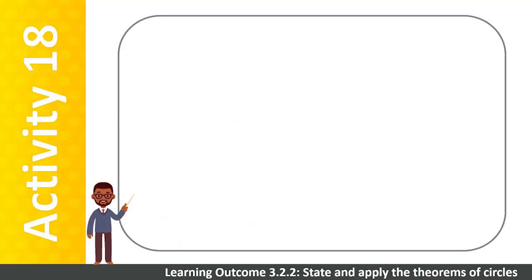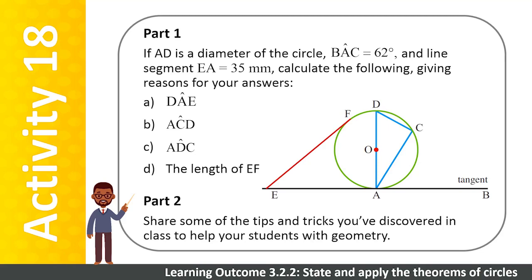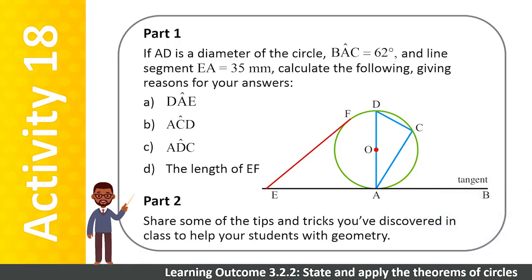You are now going to do another group activity. Part 1: First work through this problem, which uses a combination of tangent theorems. If AD is a diameter of the circle, angle BAC equals 62 degrees, and line segment EA equals 35 millimeters, calculate the required angles. Part 2: Once you've completed the question, share some of the tips and tricks you've discovered in class to help your students with geometry. Let's watch a video of the solution.